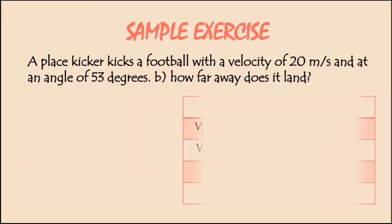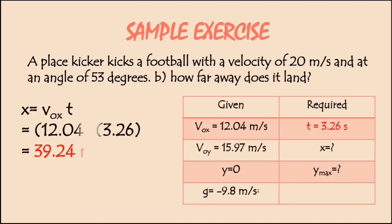Next, how far away does it land? We're going to know the distance using the time that we got. The velocity would be 12.04 in horizontal component multiplied by 3.26. If we multiply that, we'll have a value of 39.24 meter.